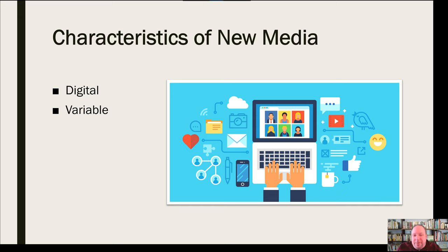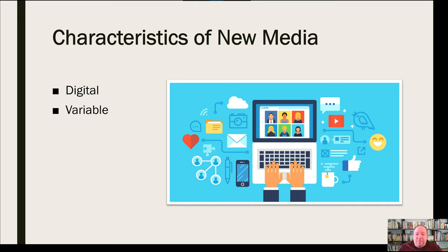New media is also variable — variable in how we can create things and the function of those things, the way we use this technology and the information we get from it, but also in the way that we can access it. Lots of times digital new media will have multiple entry points. For example, you don't always have to check Facebook from your phone — you can check it from your computer, your watch, and all these different devices.